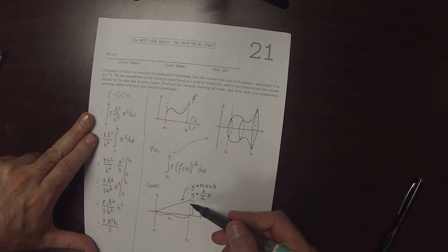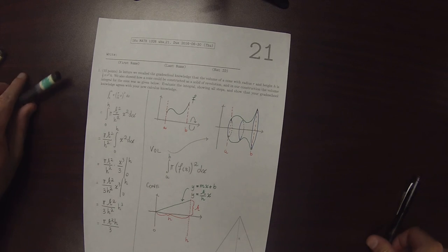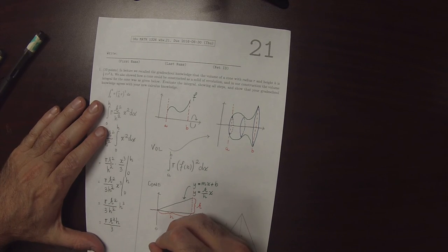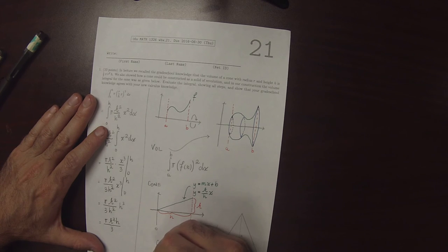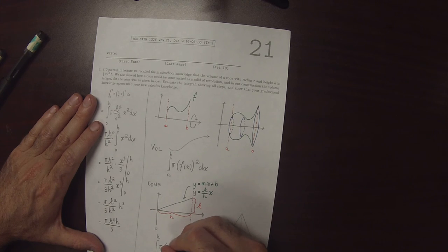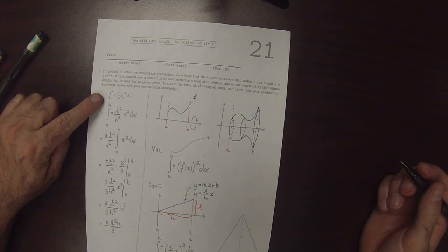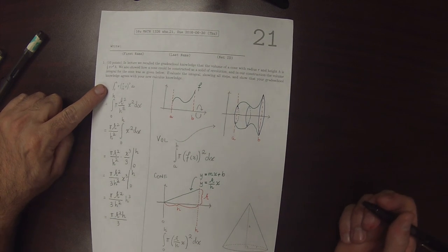So we take this and revolve it around the axis to get this shape. So that the resulting integral is the integral from 0 to h of pi, r over h, x, squared, dx. Which is the integral you were requested to evaluate at the beginning of the exercise.